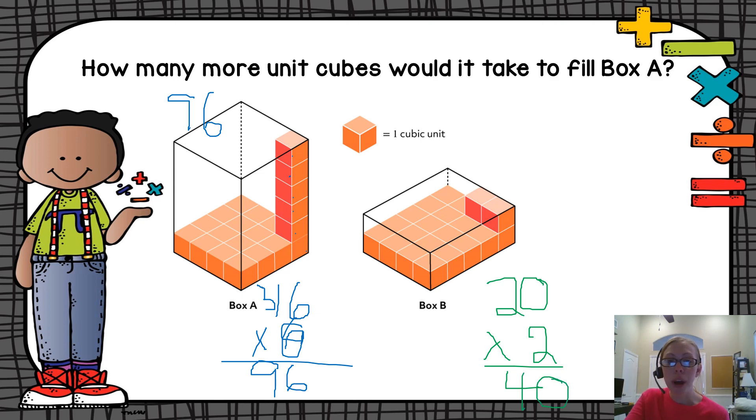So Box A definitely has more, but how many more? 96 compared to 40. Well, of course I can subtract here: 96 minus 40 would give me 56 more blocks to fill Box A.